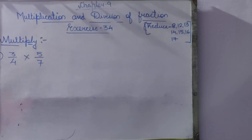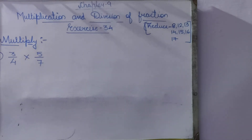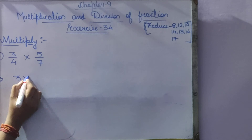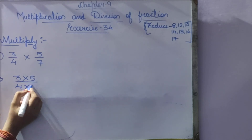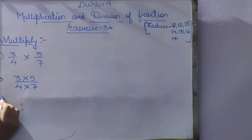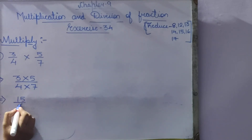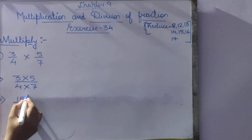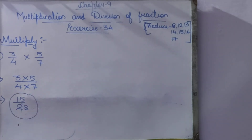Exercise 34. Children, there are 20 questions, of which questions 8, 12, 13, 14, 15, 16, and 17 we are going to reduce. Starting from question 1: 3/4 × 5/7. So 3 × 5 = 15 and 4 × 7 = 28. Denominator is greater than numerator, so no conversion needed. Answer is 15/28.